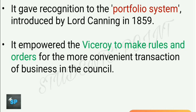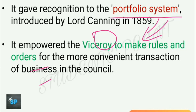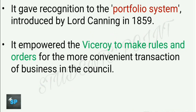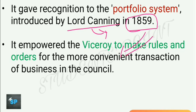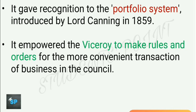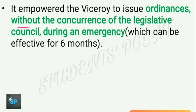The act also gave recognition to the portfolio system — the allocation of different departments to different ministers. This system was introduced by Lord Canning, the first Viceroy of India, in the year 1859 and got approval through this Indian Councils Act of 1861. The act also empowered the Viceroy to make rules for the transaction of business in the council, and to issue ordinances without the concurrence of the legislative council during an emergency. At present, the President has similar powers to issue ordinances valid for six months during an emergency.